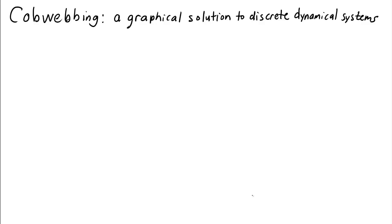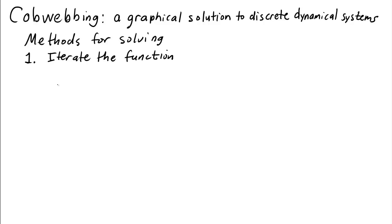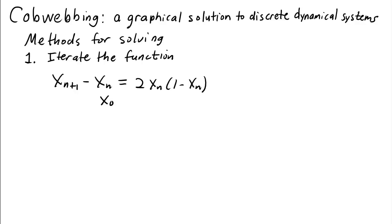In this lecture we'll discuss a graphical method for solving discrete dynamical systems, but before we do that let's review other methods we have for solving dynamical systems. One method is just to iterate the function. For example, if we had the dynamical system x_{n+1} - x_n = 2·x_n·(1 - x_n) with initial condition x_0 = 0.1,